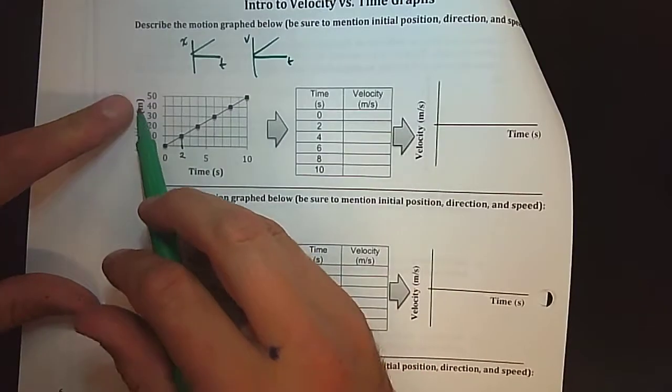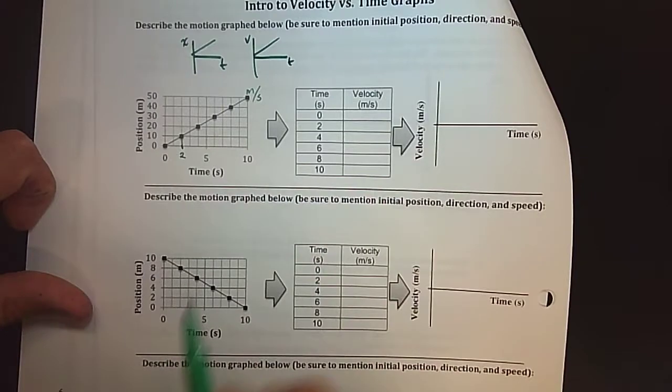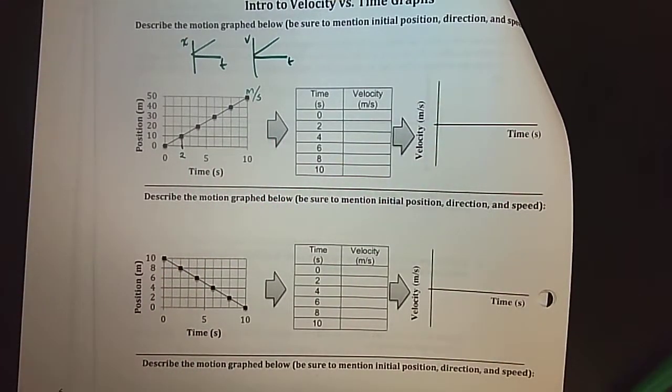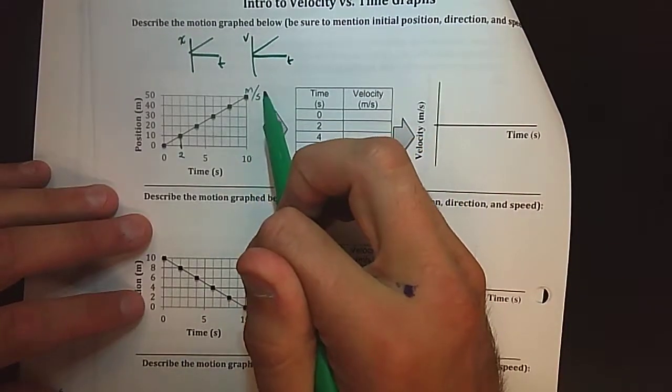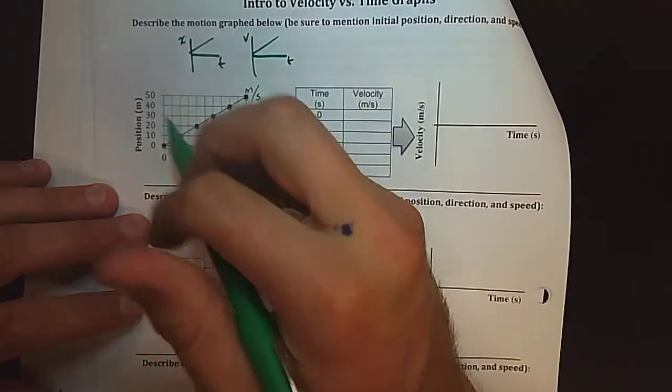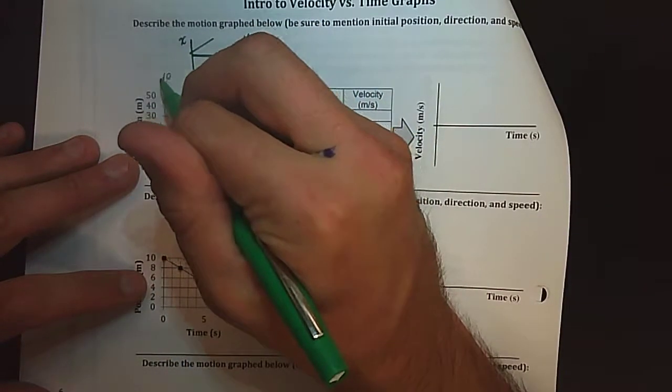And the units of my slope here, meters for my y-axis and seconds for my x-axis, is meters per second. So it looks like my slope of this graph literally is my velocity. In this case if I find my slope I go up ten and I go to the right two.